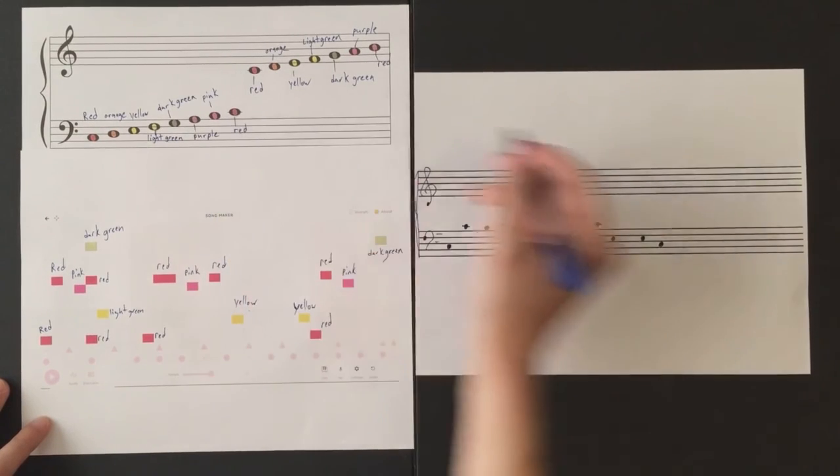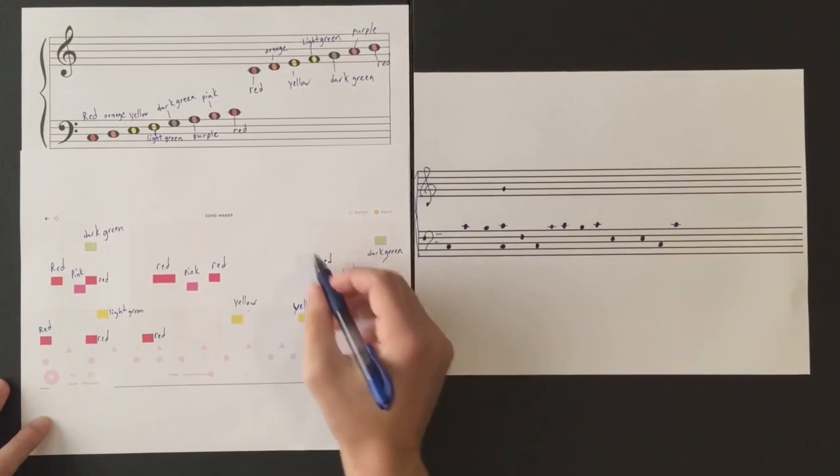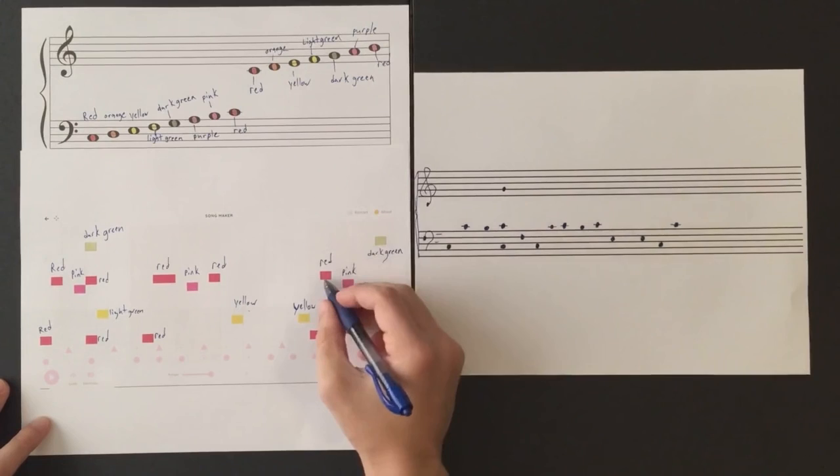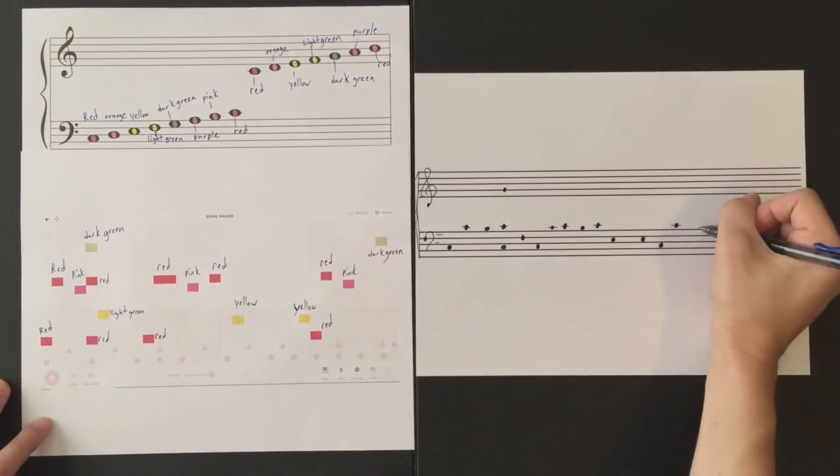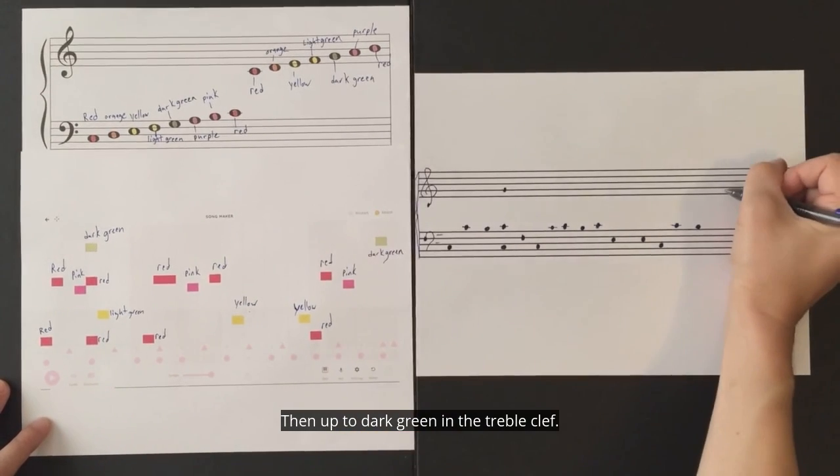Then we're on the low red. Back to the middle red, or the higher red, with the ledger line. And then pink. Then up to dark green in the treble clef.